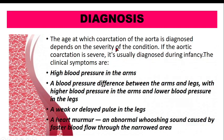Diagnosis depends on severity. Clinical signs include high blood pressure in the arms, a pressure difference greater than 20 mmHg between arms and legs, weak or delayed pulse in the legs compared to the arms — indicating less blood volume reaching the lower extremities — and a heart murmur: an abnormal whooshing sound caused by faster blood flow through the narrowed area.